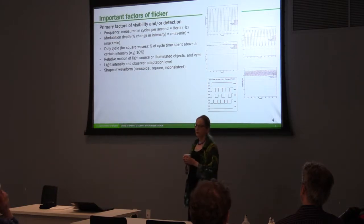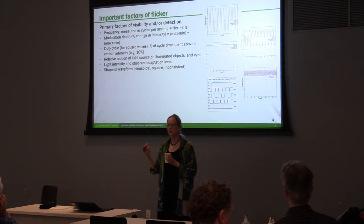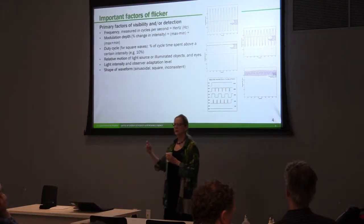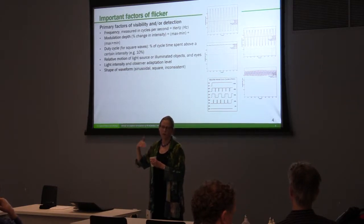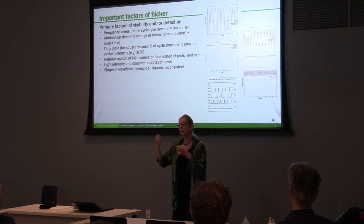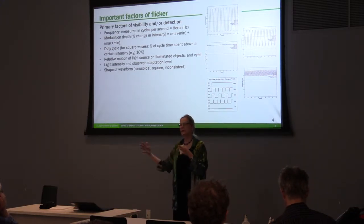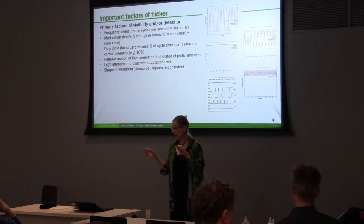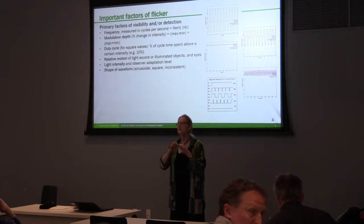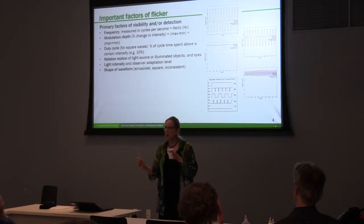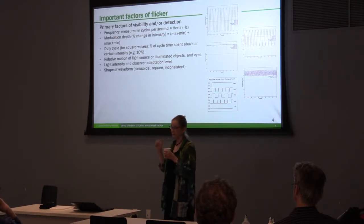The duty cycle for square waves basically says it's the percent of time in a cycle that the light source is on as opposed to off. Some people define duty cycle as the percentage of time that the light is at a high light level versus a low light level. If you're using pulse width modulation to reduce the output, you can turn that light source off for one-tenth of the time it's on, and it will emit on average 90% of its light output.